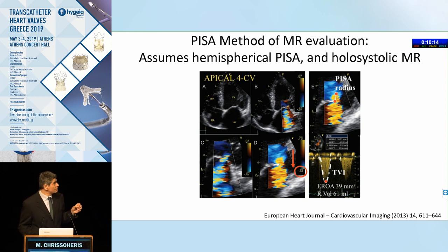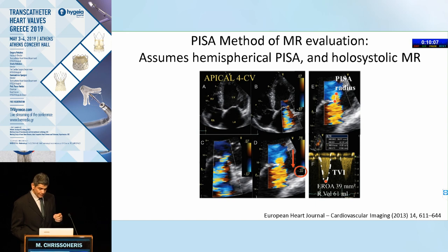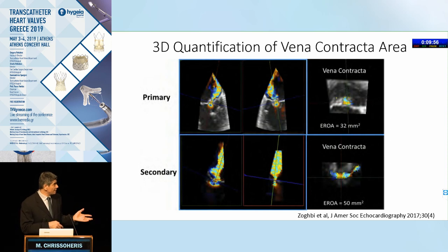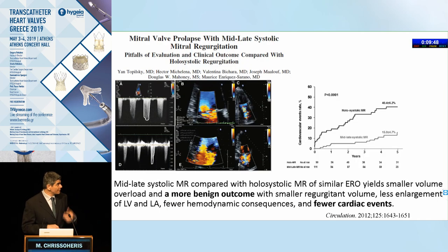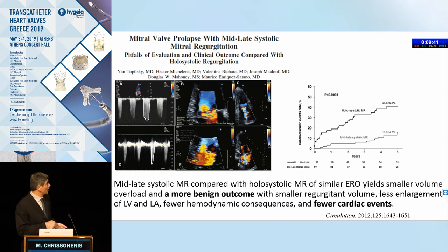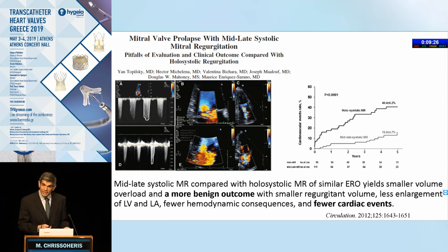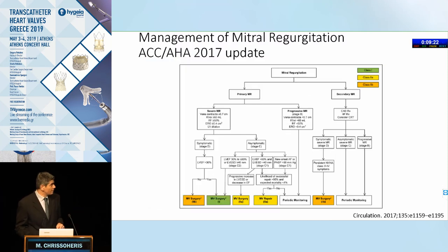The ERO evaluation by the PISA method is the most commonly used method in day-to-day practice for assessment of mitral regurgitation, with two caveats: one, it assumes a hemispheric PISA, and two, it assumes holosystolic MR. For secondary MR, this is not true — the PISA and ERO are more hemi-elliptical rather than spherical. Additionally, patients with prolapsing mitral valves and mid- to late-systolic MR can yield very high PISA calculations by freeze-frame that are not truly representative, since these patients don't have significant volume overload and have more benign clinical outcomes and fewer cardiac events.